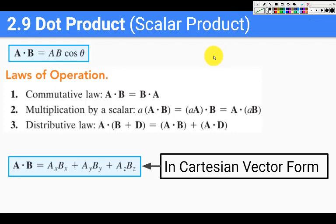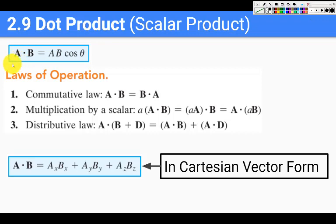The next and last concept in this chapter is the dot product, also called the scalar product. It is a product between two vectors whose result is a scalar. The basic form is: A · B = |A| |B| cos θ. I will go through this quickly since you already know about dot products from previous courses.